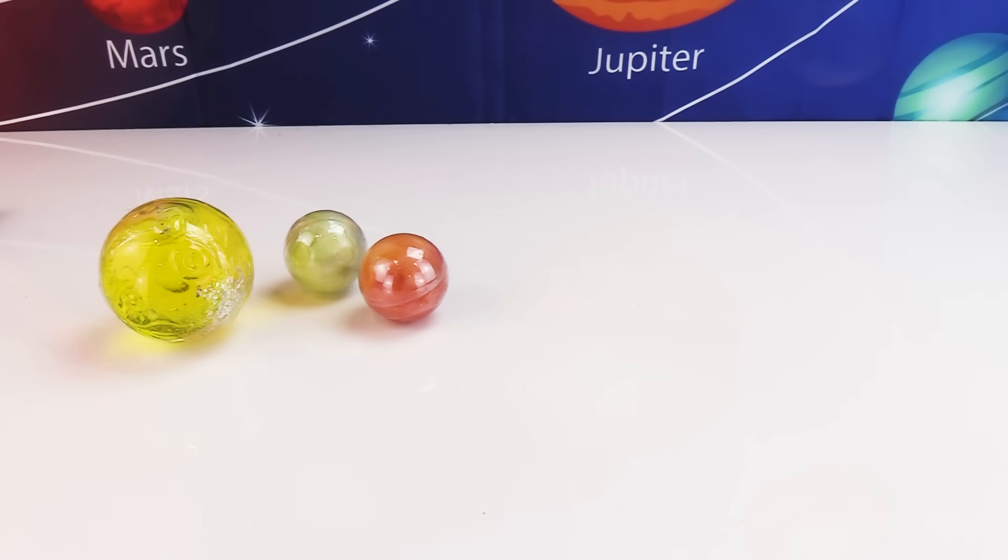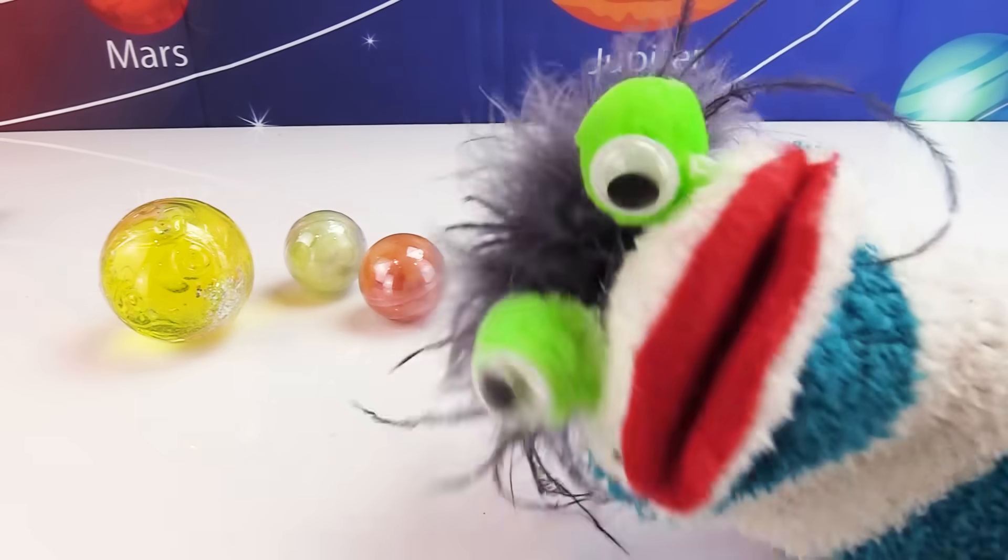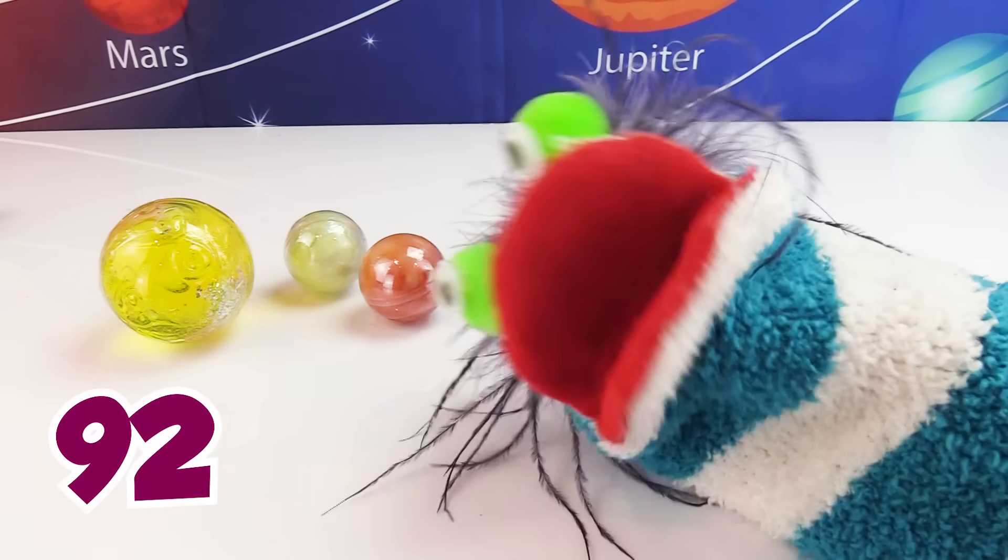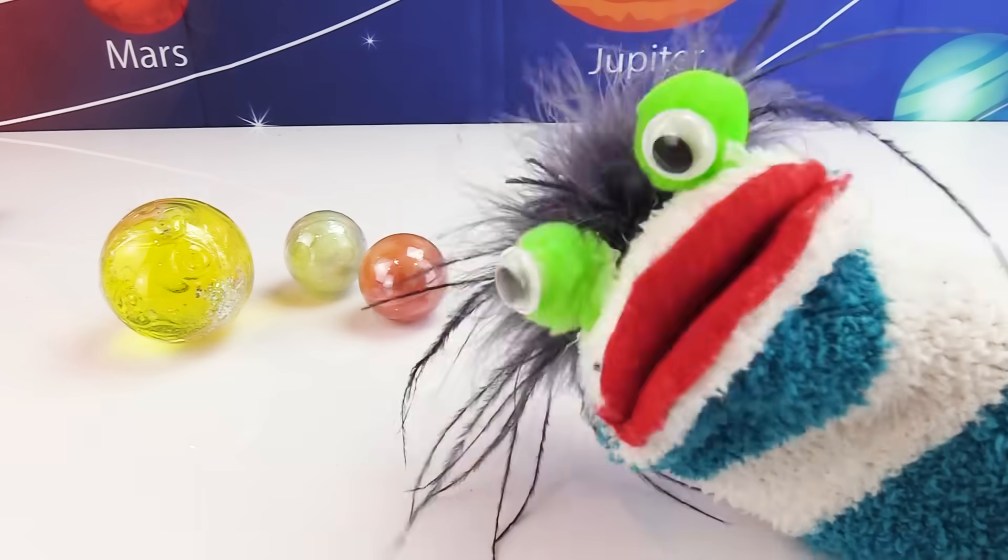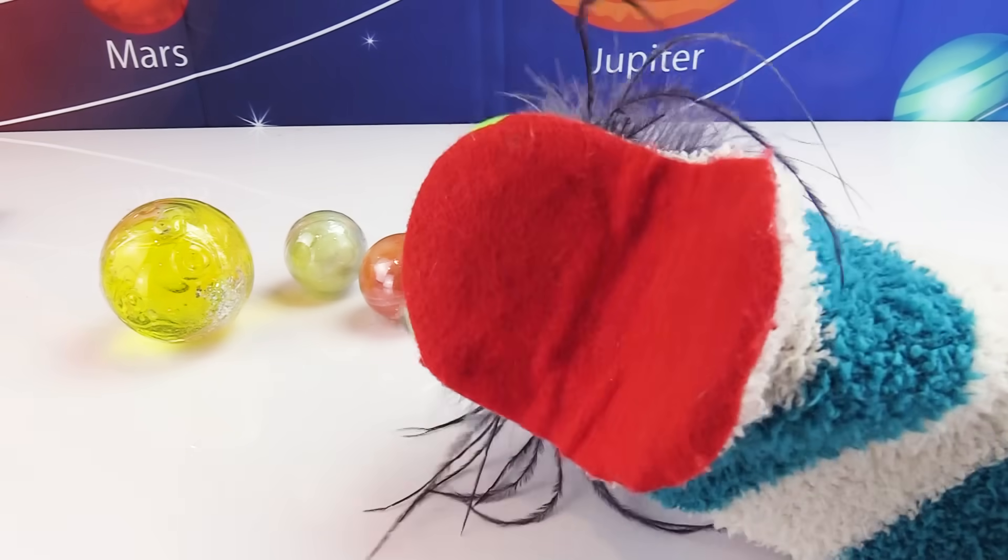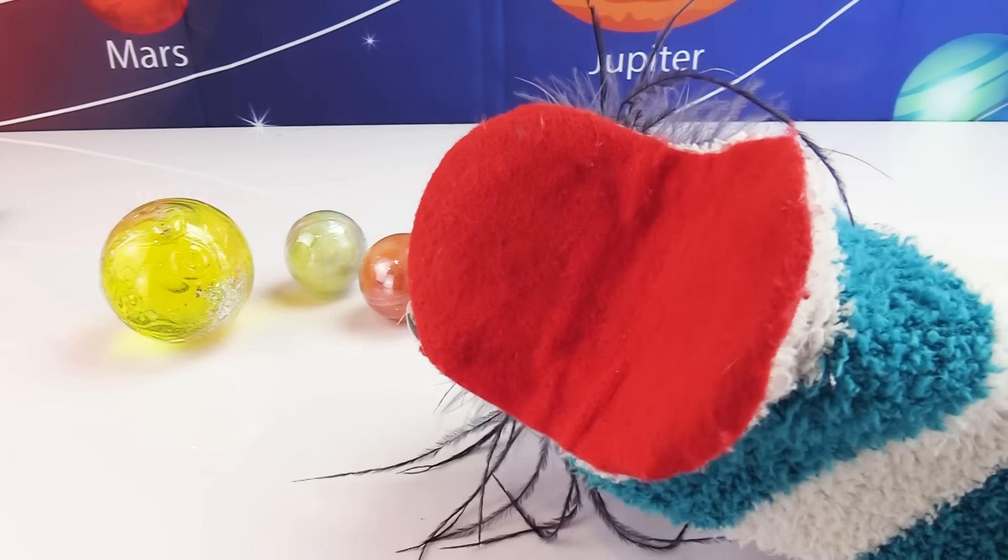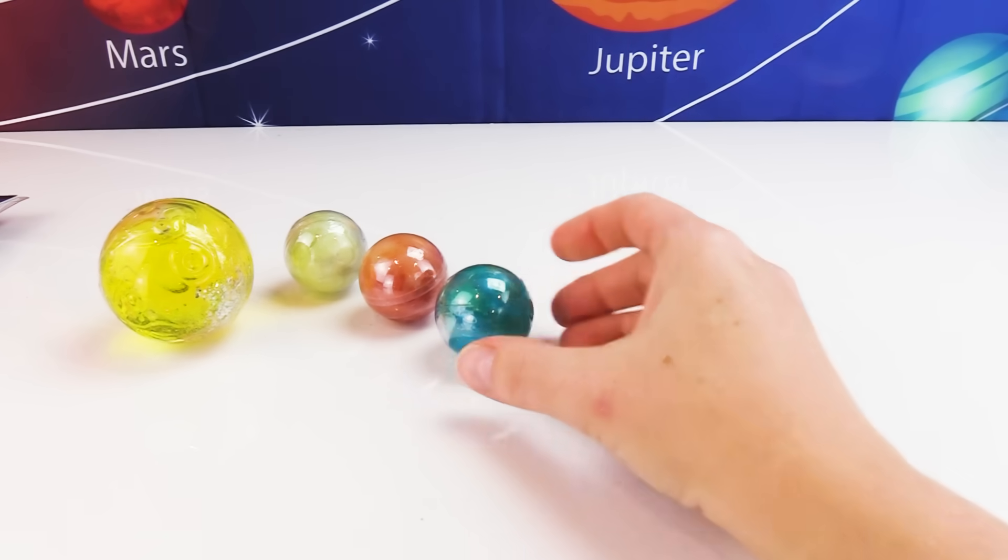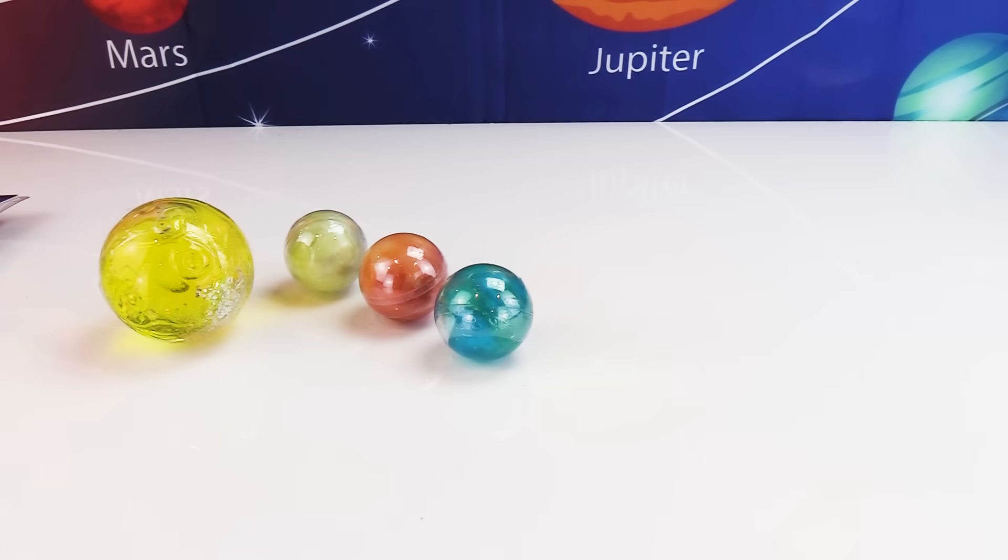Now, which planet is next? Venus! It's 67 million miles away from the Sun! Okay, so Venus will be up next! We'll put it right here! And what is the third planet closest to the Sun? The planet we live on, Earth!